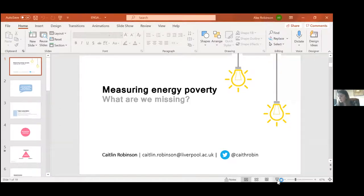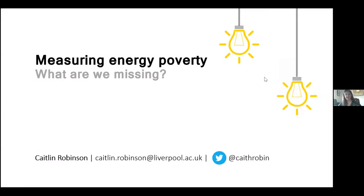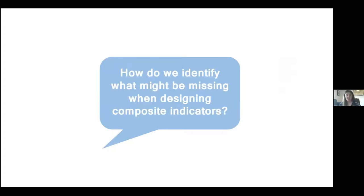Thanks Harriet. Hi everyone, it's lovely to virtually meet you. I'm Kate Robinson, a quantitative human geographer based at the University of Liverpool. The presentation I'm going to give today builds on Harriet's introduction to composite indicators, focusing on the question of how we identify what might be missing when designing composite indicators. Given that energy poverty is such a rapidly expanding research area — both in its geographic and methodological scope — it's really important to evaluate what we might be missing from our approaches to its measurement.